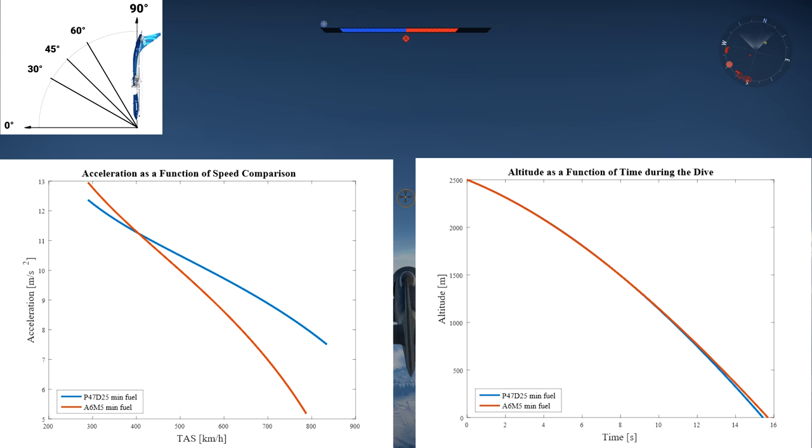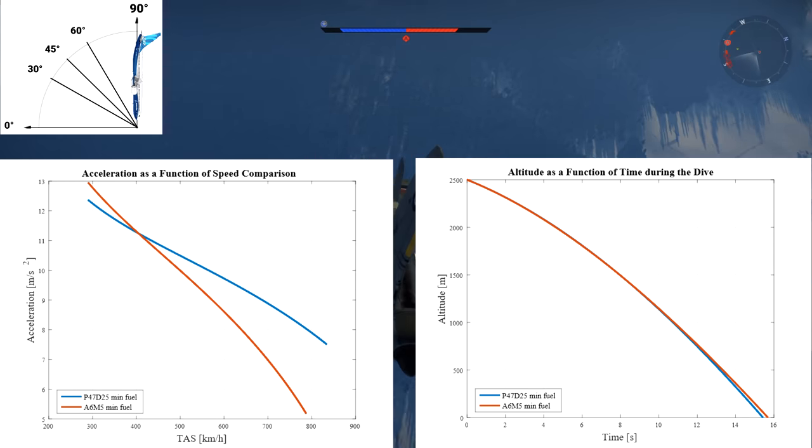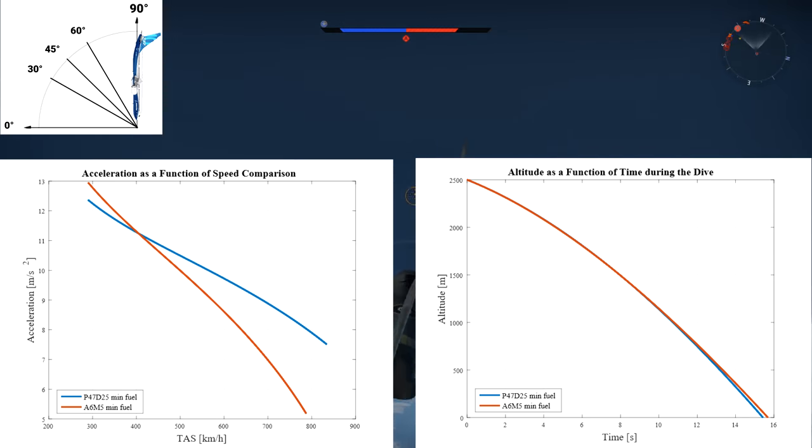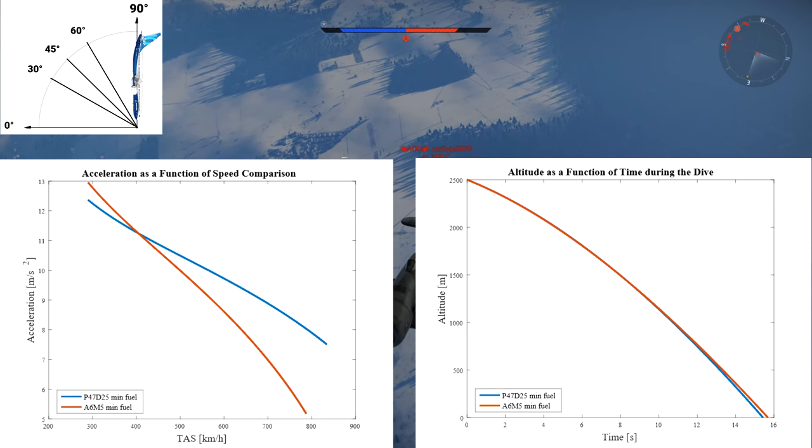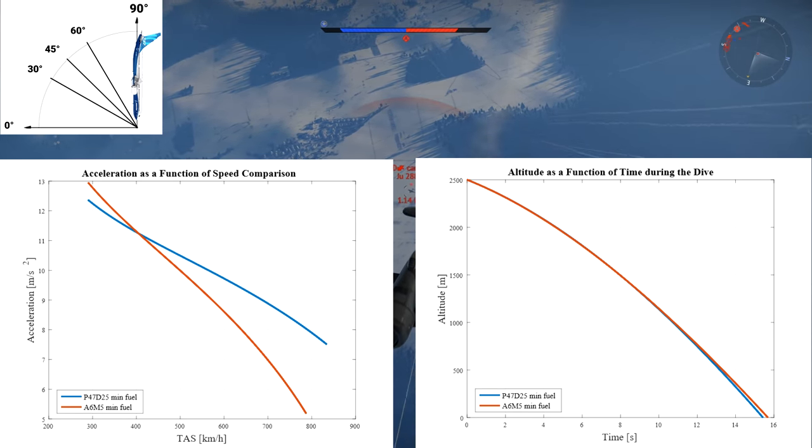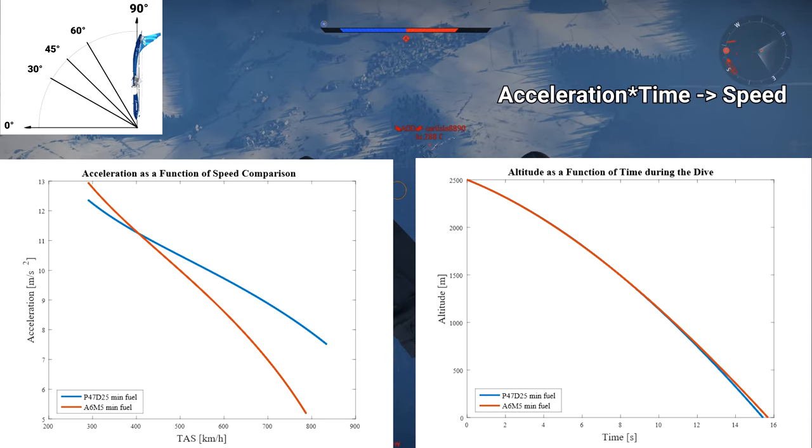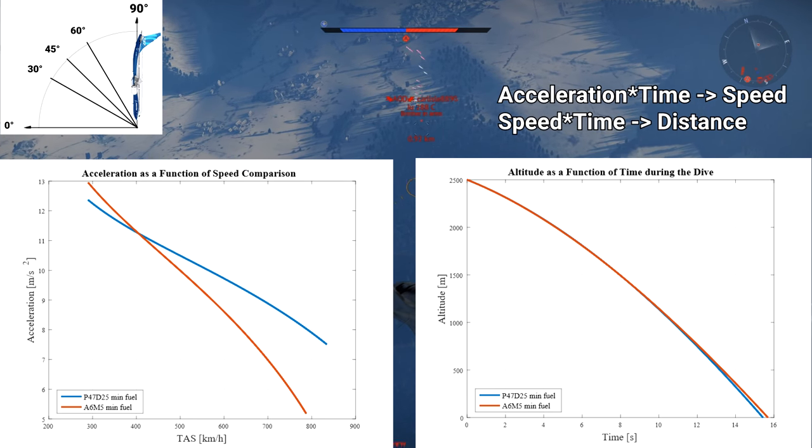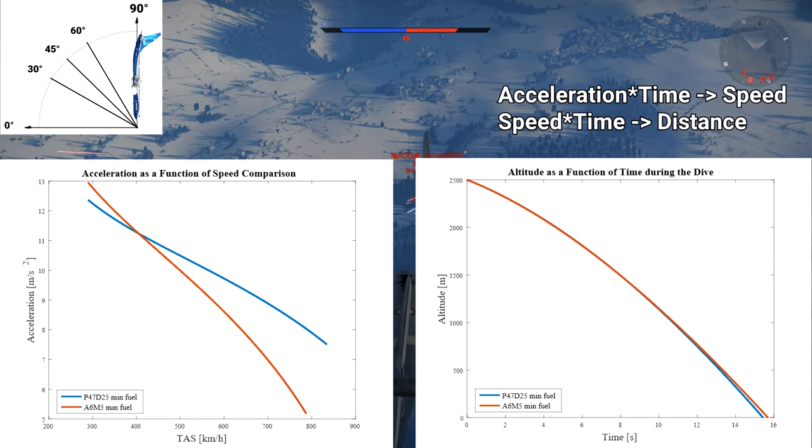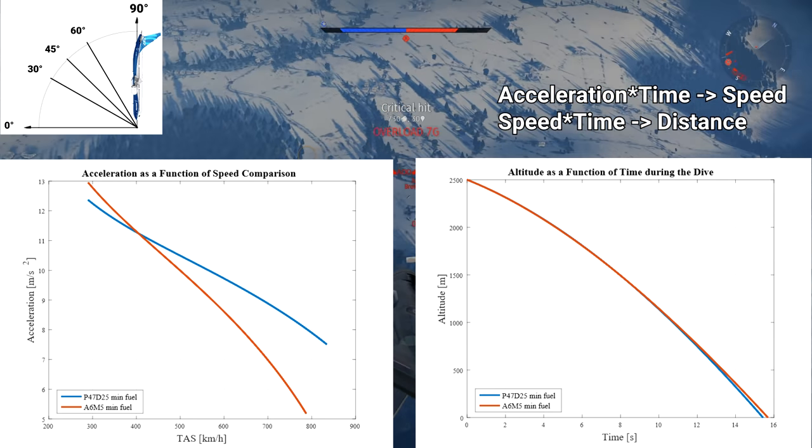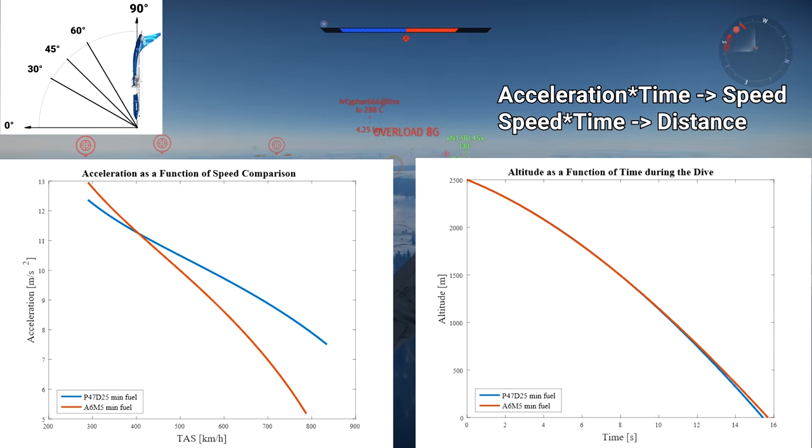If we look at the altitude as a function of time graph however, the P-47 only beats the Zero by 0.2 seconds in a 15 second 2500 meter dive. Why is the time difference so low despite the P-47 having the acceleration advantage for most of the dive? That's because it takes time for an acceleration advantage to transform into a speed advantage, and then it takes time for the speed advantage to translate into a distance separation, and 15 seconds is not nearly long enough for the P-47 to really pull away from the Zero.